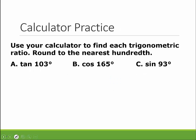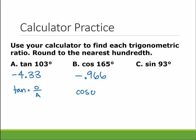Let's type some of these into our calculator. If we type in the tangent of 103, we end up with negative 4.33. Now remember, tangent is opposite over adjacent, and somehow we ended up with a negative number — we'll talk tomorrow in class about how that's possible. Cosine of 165 gives us negative 0.966; cosine is adjacent over hypotenuse, so we end up with a negative, and we'll talk about that tomorrow. But sine of 93 is 0.999. Sine of any angle is opposite over hypotenuse, so keep that in mind — we'll need to take sine, cosine, and tangent of numbers bigger than 90.